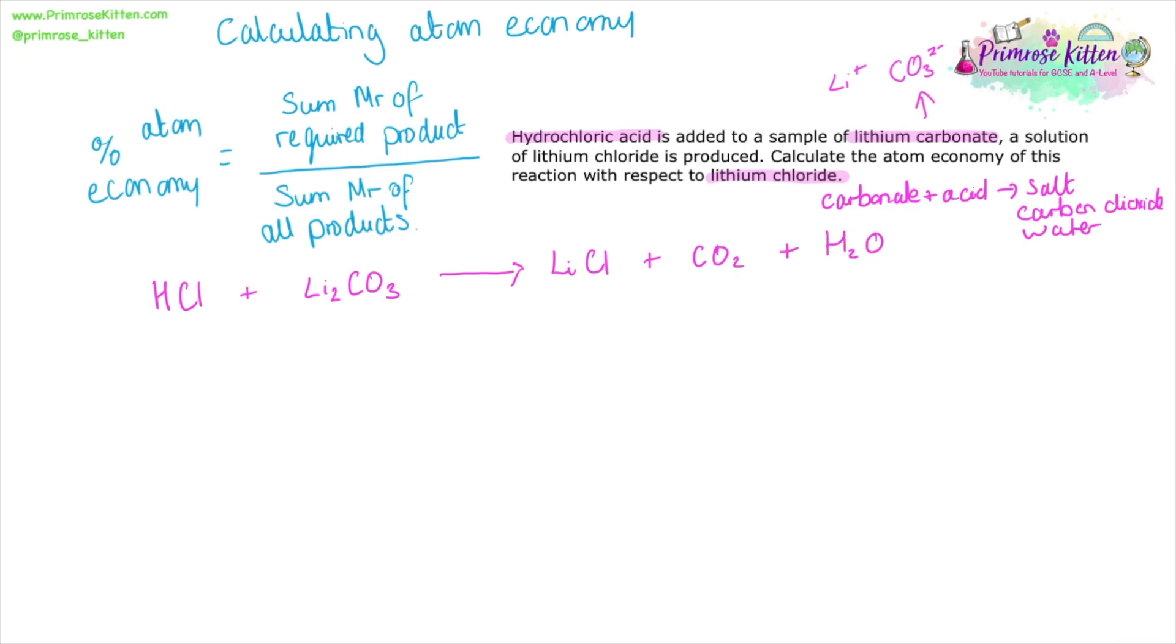Now we need to balance this. The obvious place to start is with the lithiums, because we know lithium carbonate is Li2, so we need to put 2 on there. Then we double the number of chlorine, so we need to go back to the left hand side and put 2 in front of the hydrochloric acid. And then after that, everything is balanced.